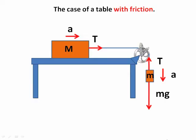Now we'll look at the case of a table with friction, and we have our big mass, M, and our little mass, little m. This time we have friction opposing this system. Friction opposes these two masses.